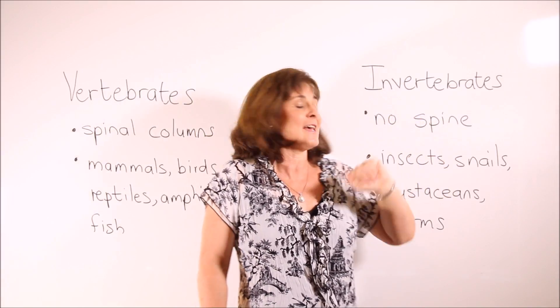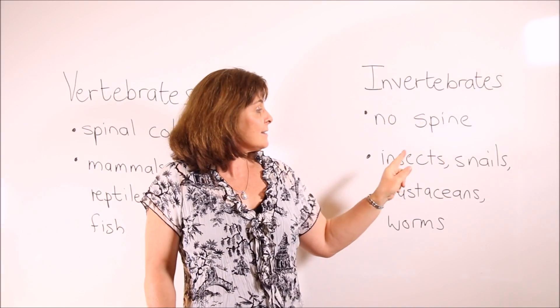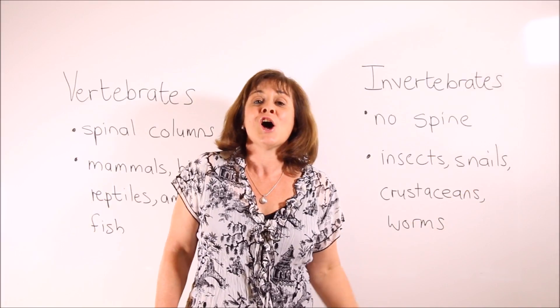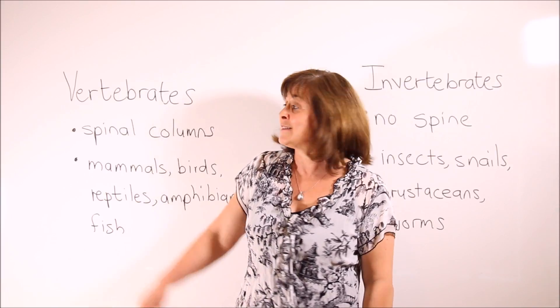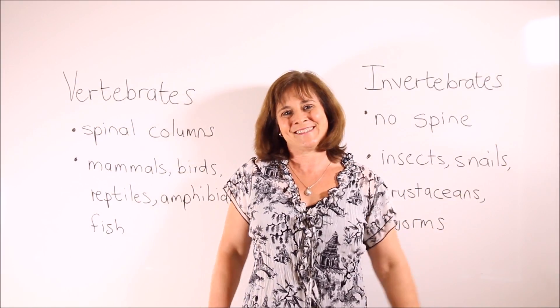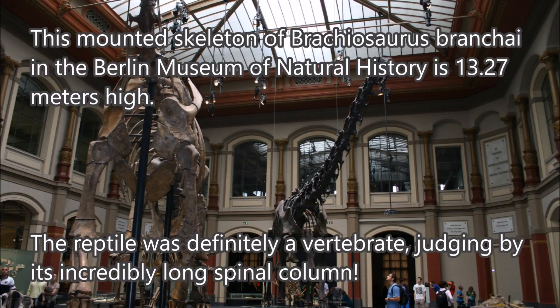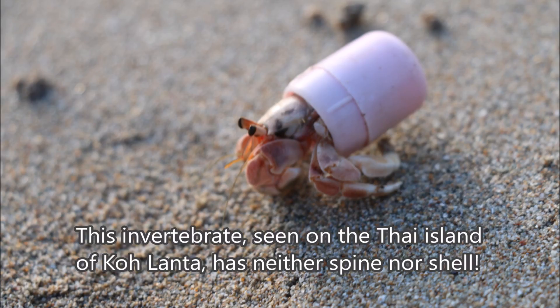Invertebrates are animals that do not have a spine — insects, snails, crustaceans, and worms are all invertebrates. This mounted skeleton of Brachiosaurus brancai in the Berlin Museum of Natural History is 13.27 meters high; the reptile was definitely a vertebrate. This invertebrate seen on the Thai island of Koh Lanta has neither spine nor shell for that matter.